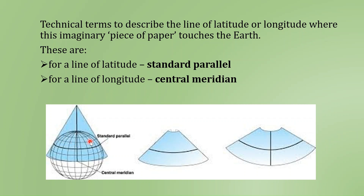When considering the developable surface around the globe, there is a technical term for the line of latitude and the line of longitude where this imaginary piece of paper is touching the earth. The line of latitude at which this imaginary paper is touching is referred to as the standard parallel, and the line of longitude where it is touching is referred to as the central meridian. The point where this particular developable surface is touching the earth is where we will have the maximum accuracy during map projection, but as we move away from the standard parallel or central meridian, there will be distortion.